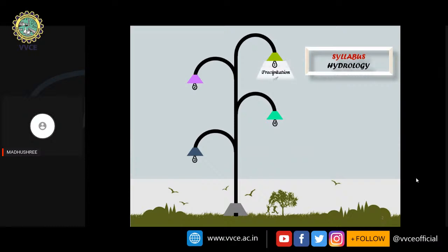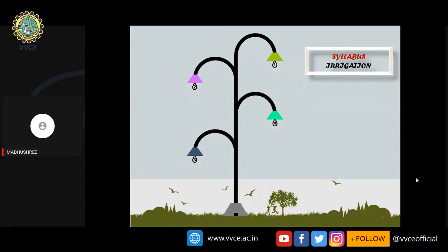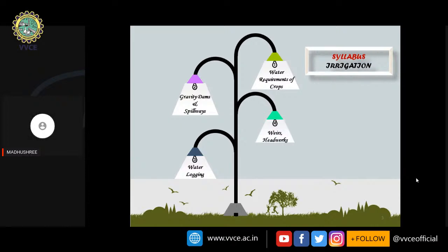As per the GATE syllabus for hydrology, the important topics include precipitation and its measurements, hydrographs, groundwater hydrology, and flood estimation. Coming to the syllabus of irrigation engineering, the topics are water requirements of crops, gravity dams and spillways, waterlogging, weirs, and hydrographs.